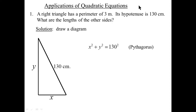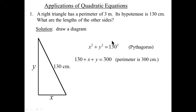So 130 squared must equal x squared plus y squared. And when we add up all the sides, we have to get 3 meters, which is 300 centimeters. Notice we put 300 centimeters here because the 130 is in centimeters, and we have to keep the units consistent. Simplifying this equation, we can pull the 130 over, join it with the 300, and then pull the x over, and we solve for y.